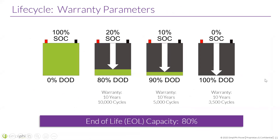Our warranty has actually changed — every warranty now, no matter what your depth of discharge is, is 10 years with unlimited cycles. Unlimited cycles within that 10-year period, so whatever comes first. End of life — which you'll see called out in various warranties — refers to what the battery's capacity is expected to be at the end of the warranty period. We call out 80% EOL, which tends to be higher than many other manufacturers, and it's the minimum you'd expect to see at that 10-year mark.